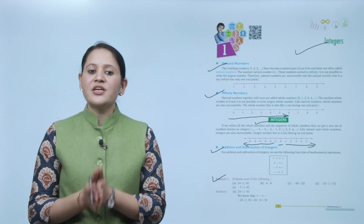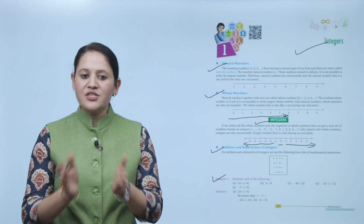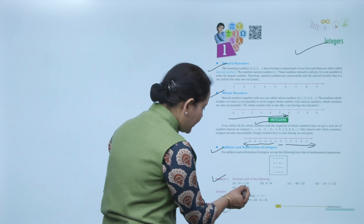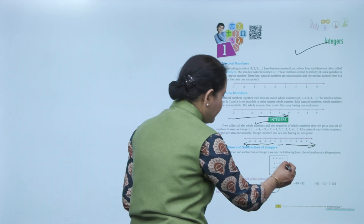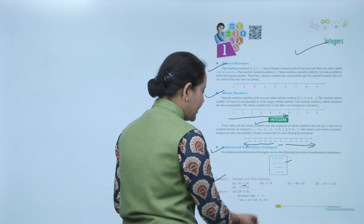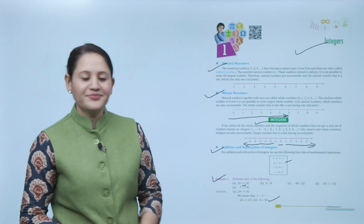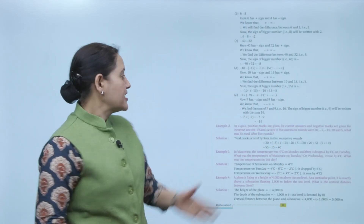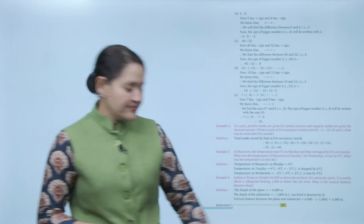Now we will take an example: evaluate 24 plus (minus 6). First we remove the bracket — plus and minus become minus — so 24 minus 6, that is 18. Clear. Some more examples are given; do practice them.